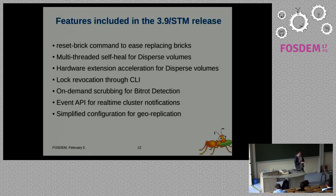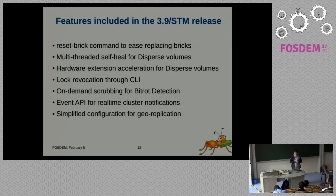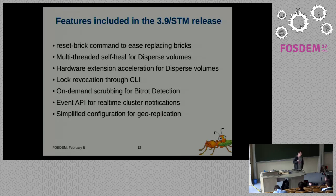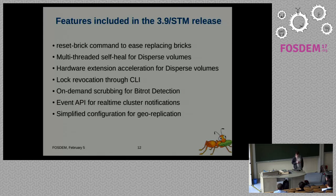With the 3.9 release we added additional commands to ease the replacement of bricks. Multi-threaded self-heal existed for normal replication but not for erasure-coded replication, so now we have multi-threaded self-heal for dispersed volumes. For erasure-coded volumes we also added CPU optimizations — some assembler code for the erasure-coding functions. CPU is not normally a bottleneck but with erasure-coded volumes you have more CPU usage, and on low-end hardware these optimizations make a difference.